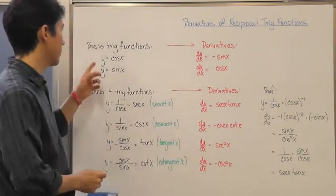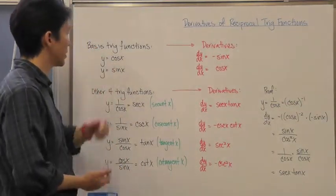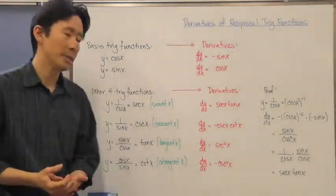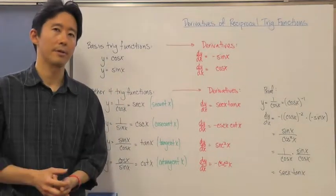Now, we of course know that the basis trig functions that we have are y equals cosine and y equals sine. And the reason why those are the basis trig functions is because all the other four trig functions are based upon those two.